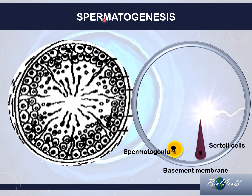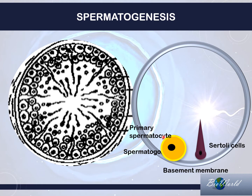During spermatogenesis, the spermatogonium will start to grow. Once it has reached its maximum size, we call it a primary spermatocyte. It will now be ready to carry out meiosis, starting first with meiosis I. When primary spermatocytes undergo meiosis I, they form two secondary spermatocytes. The number of chromosomes in the primary spermatocyte will be halved in the secondary spermatocyte.